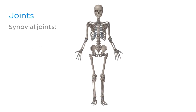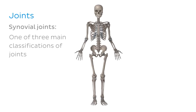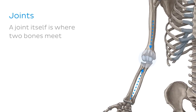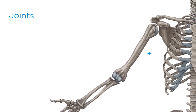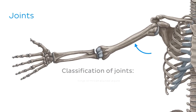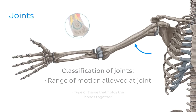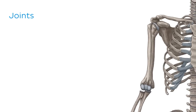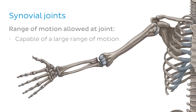Synovial joints are one of three main classifications of joints in the human body. A joint is where two bones meet — some joints allow movement and some don't. Joints can be classified by the range of motion they allow, or by the type of tissue that holds the bones together. In terms of range of motion, synovial joints are capable of a large range of motion.